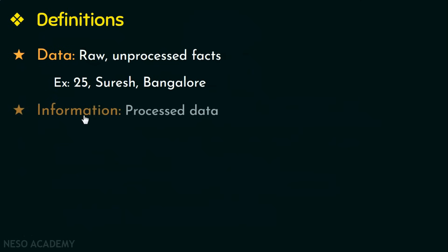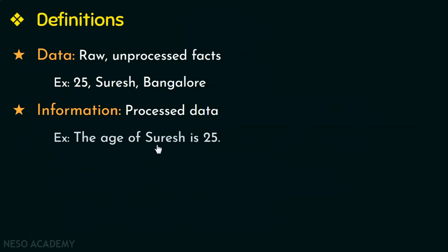Next, what is information? These unprocessed facts, otherwise called as data, when they are processed to make a meaningful context, that is called as information — or in other words, it is the processed data. For example, the age of Suresh is 25. Here we take the raw facts, process them to make a meaningful context, and that is called as information.